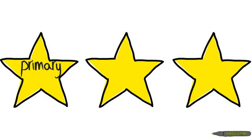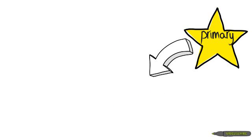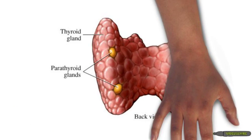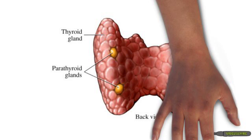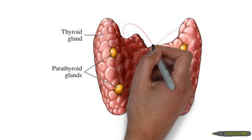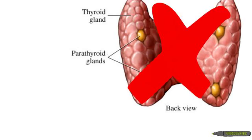What are the definitions of primary, secondary, and tertiary hormone diseases? The term primary refers to a disease in the gland that secretes the hormone. For example, primary hypothyroidism means the thyroid gland is diseased and not producing thyroxin.